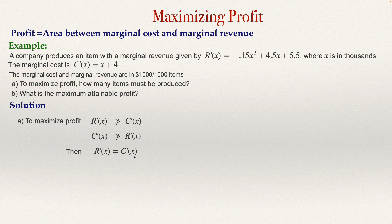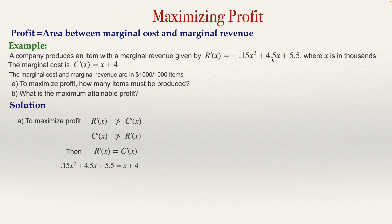For answering the first question, the marginal revenue must equal the marginal cost. The marginal revenue — that is, -0.15x² + 4.5x + 5.5 — will be equal to the marginal cost. To find how many items to produce such that marginal revenue equals marginal cost, I need to solve this equation. This is a quadratic equation. You can solve it by hand, or if you have software like GeoGebra, just use GeoGebra to solve it.